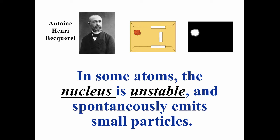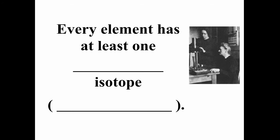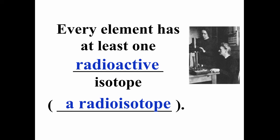He found that uranium was naturally radioactive, naturally unstable, and in general, in some atoms, the nucleus is unstable and spontaneously emits small particles. Atoms that do this, that spontaneously emit small particles or energy, are what we call radioactive elements. Every element has at least one radioactive isotope, which we call a radioisotope.